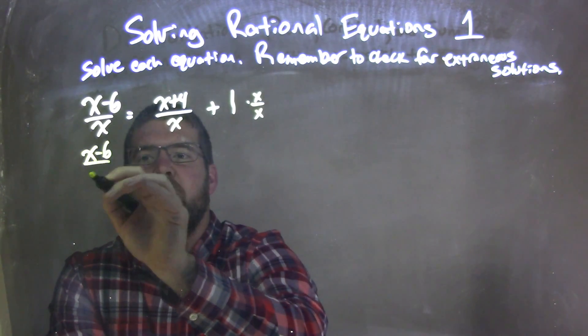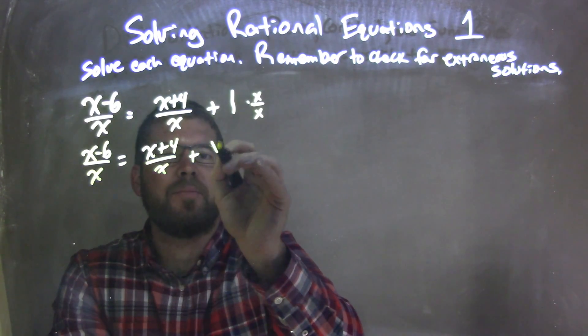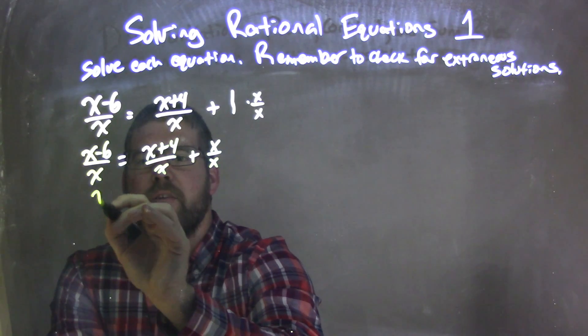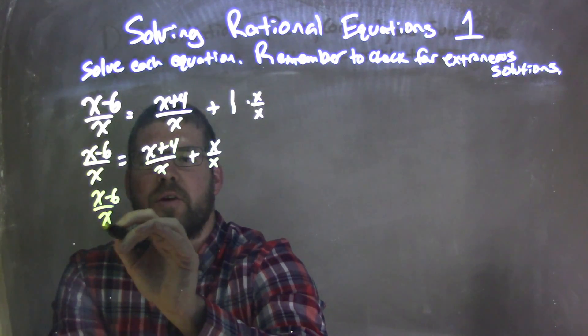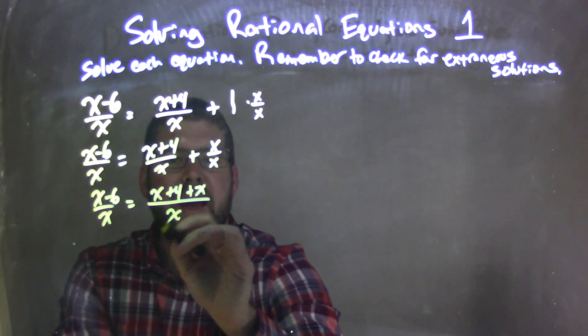So we have x minus 6 over x equals x plus 4 over x plus x over x. Now that we have the same base, I can combine the two, giving me x minus 6 on the left over x is equal to x plus 4 plus x over x.